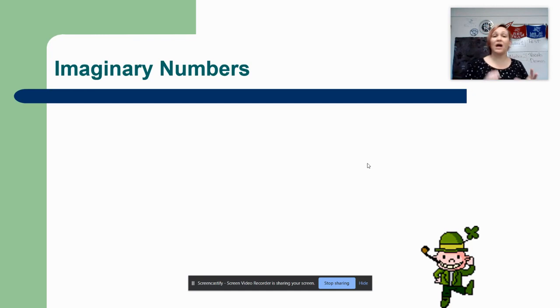Imaginary numbers do not exist in the real world and are the whole reason why in Algebra 1 class and even in this class we wrote things like 'all real numbers'. We had to write all real numbers because there is such a thing as imaginary numbers.